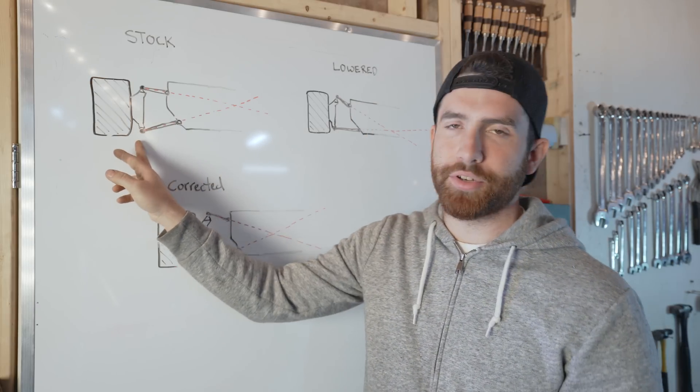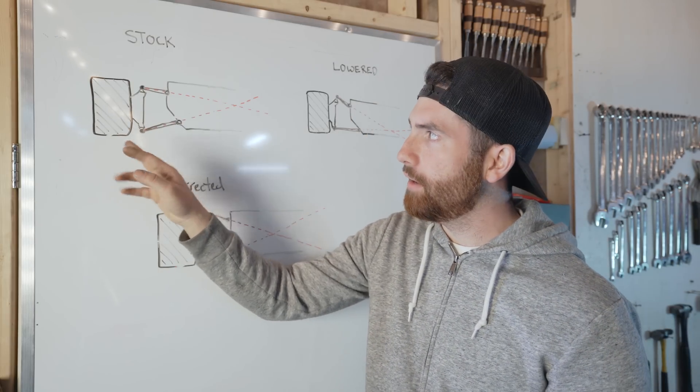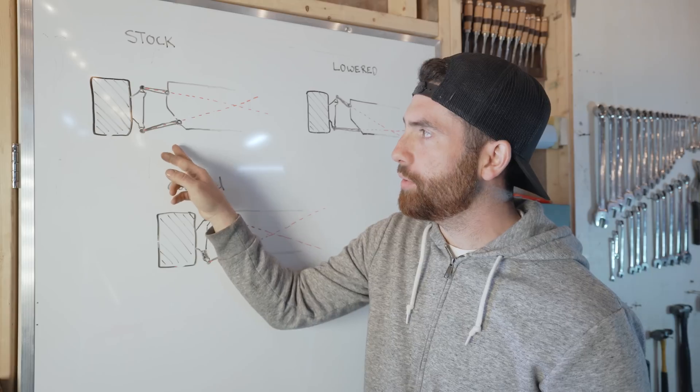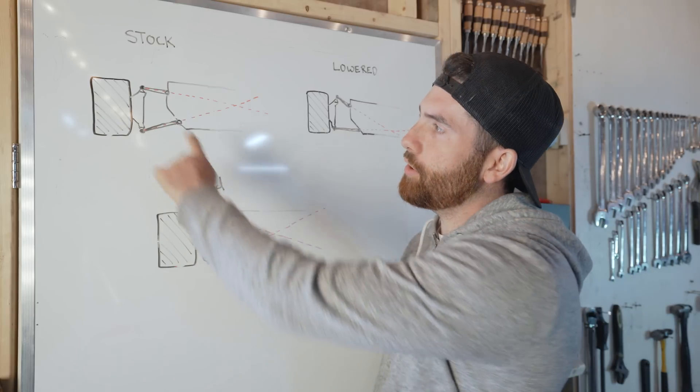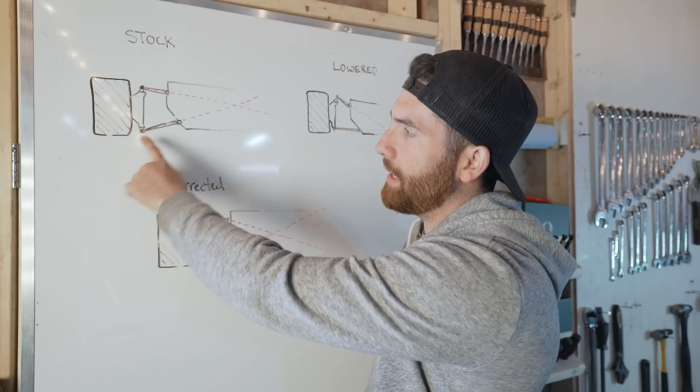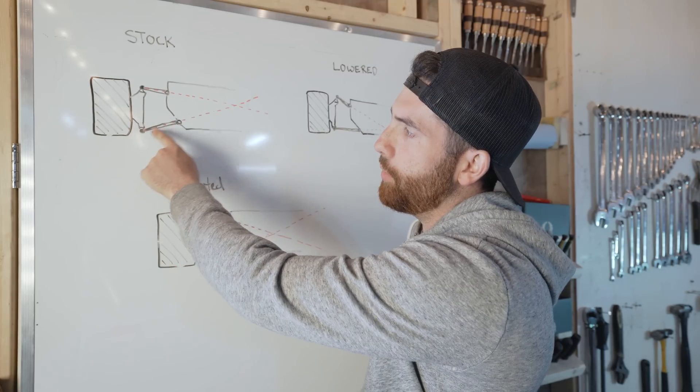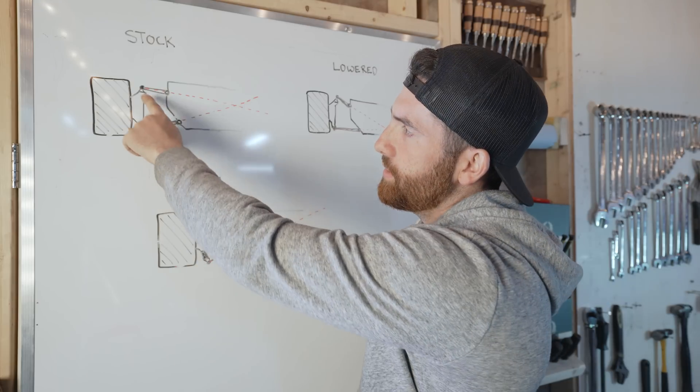This is demonstrating a stock Mini configuration with its double wishbones. What you do is you take your upper and your lower control arm and you draw an imaginary line in between the two points at which they rotate.